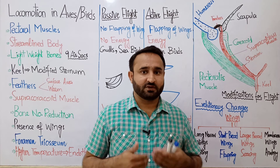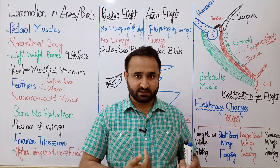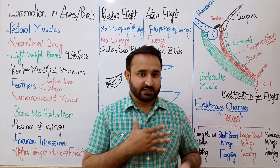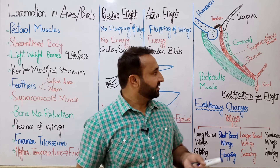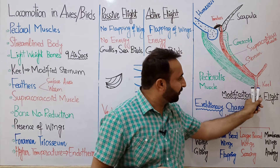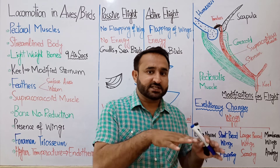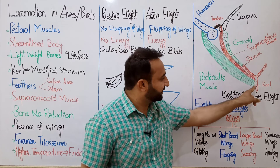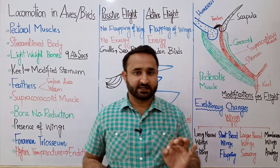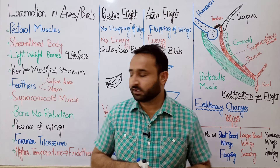हमारे में यह sternum flat है, जबके birds में यह flat के साथ-साथ बाहर की तरफ एक उभरा हुआ process है जिसको keel कहते हैं। तो basically यह sternum है और sternum का बाहर की तरफ उभरा हुआ process — keel — जो है, यह attachment provide करता है for the flight muscles। यह flight muscles से मुराद pectoralis muscles और supra-coracoideus muscles — दोनों इसके साथ attached हैं। So it provides points of attachment for the flight muscles so that energetic flight can be achieved.